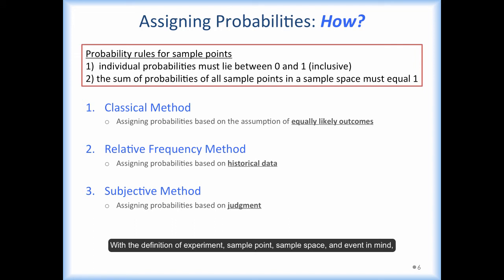With the definition of experiment, sample points, sample space, and event in mind, the next thing I want to talk about is how to assign probabilities. There are three methods. The classical method assigns probabilities based on the assumption of equally likely outcomes. The relative frequency method assigns probabilities based on historical data. The subjective method assigns probabilities based on personal judgment.